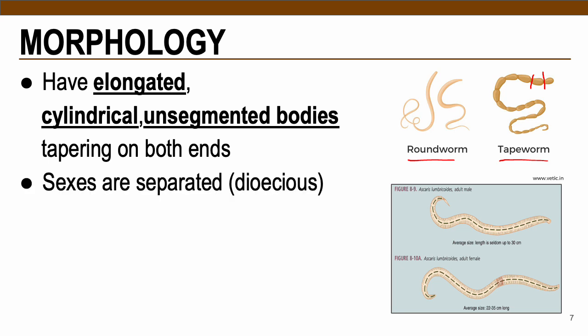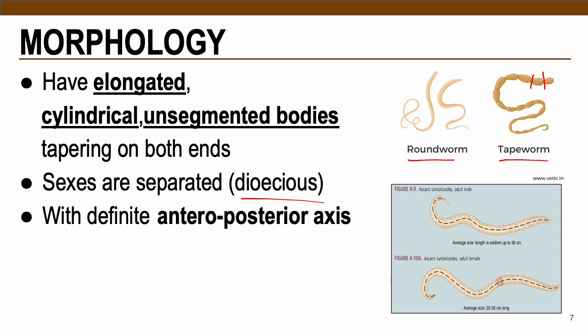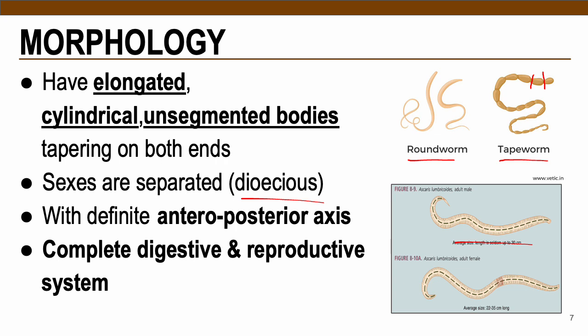In terms of sexes, nematodes are separated — there is a male and female counterpart, also called dioecious. They have an anteroposterior axis, a line running from the head or mouth to the tail, making them bilaterally symmetrical and dividing the organism into two portions. Nematodes have a complete digestive and reproductive system, but no circulatory and respiratory system.